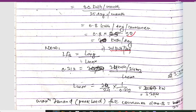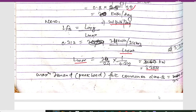Using LFB = L_average / L_max, with LFB = 0.312 and L_average = 24 kWh per day: 0.312 = 24 / (24 × L_max), solving gives L_max = 3.2 kWh. So the peak load (maximum demand) for consumer class B is 3.2 kWh.